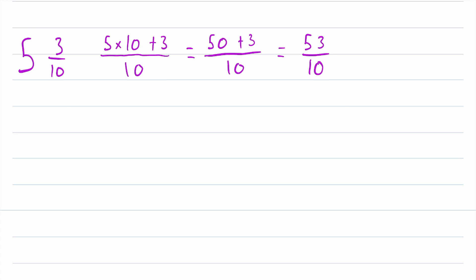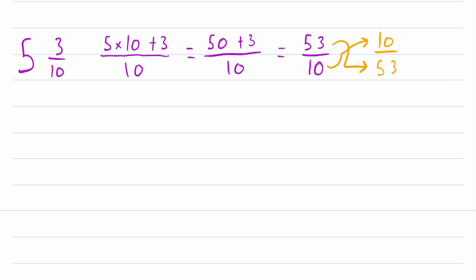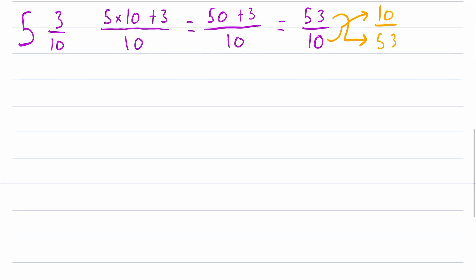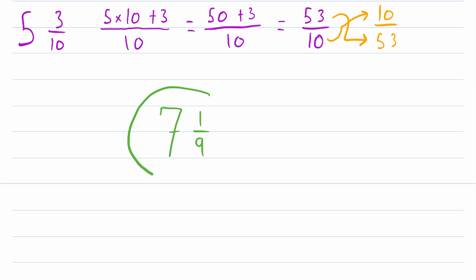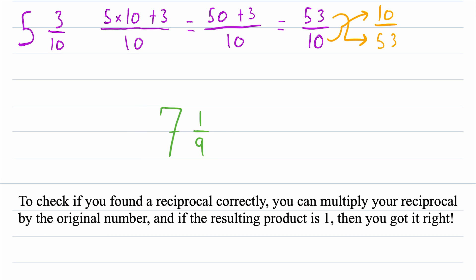Then finding the reciprocal is an easy and familiar process — move the numerator down to the denominator and move the denominator up to the numerator: 10 over 53. That is the reciprocal of 5 and 3 tenths. So that's really all there is to it — that's how you find the reciprocal of a mixed number. And let me leave you with an example to try on your own — let me know in the comments what you get. Try to find the reciprocal of the mixed number seven and one ninth.